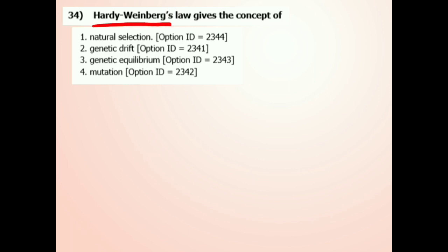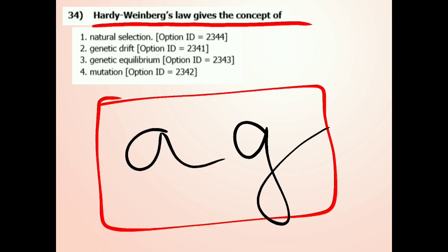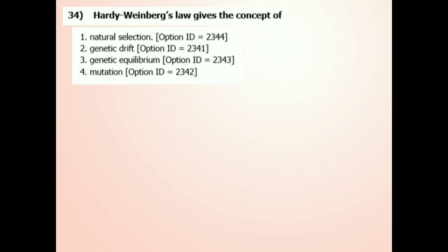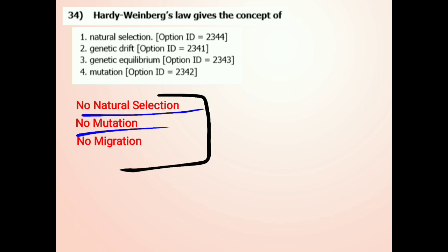Question number 34: Hardy-Weinberg Law gives the concept of? The Hardy-Weinberg Principle basically states that in a large population, the allele frequency and genotype frequency remain constant. They said that this type of ideal population will not have natural selection, mutation, or migration. In normal situations, these forces do exist, but in the ideal Hardy-Weinberg population they are absent.